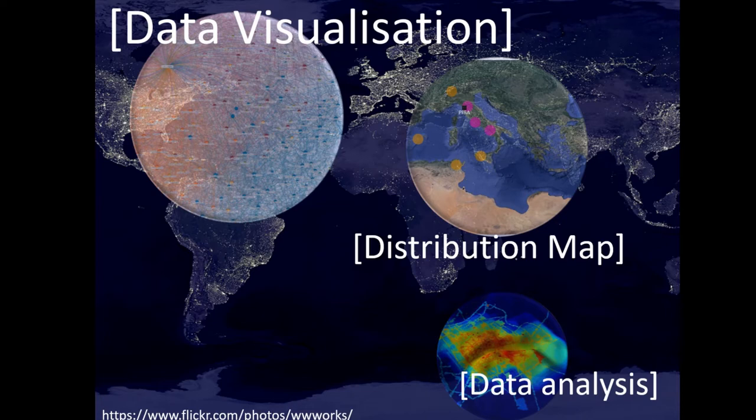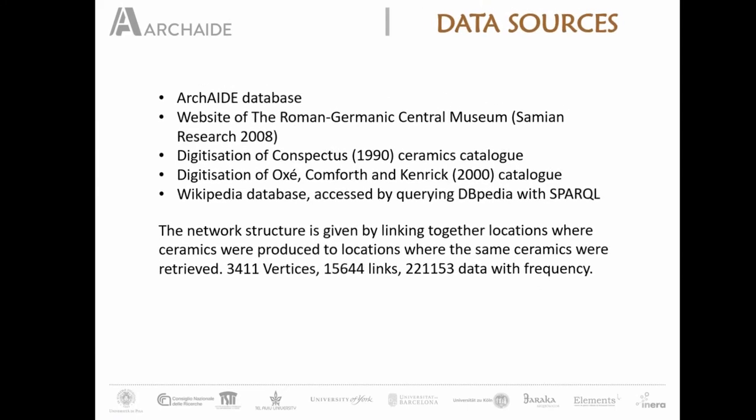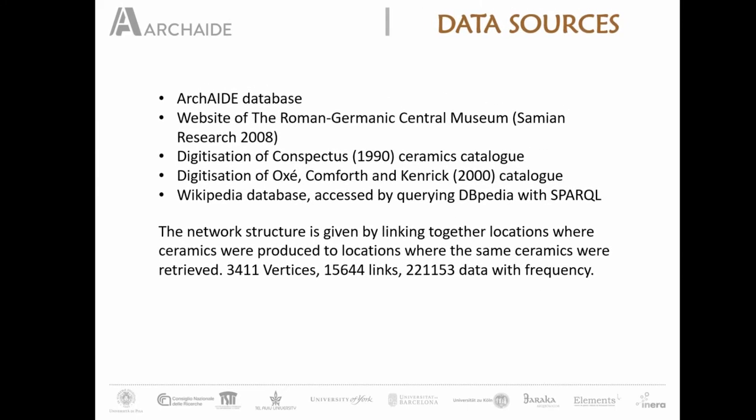We started working with this data thinking about a big data approach. The data we use are mainly from our database, but some come from the Roman Germanic Central Museum website, which collects many thousands of records related to Terra Sigillata through the automatic digitization of the Conspectus catalog, the digitization of the Ceramic catalog about stems of Terra Sigillata, and also using a SPARQL endpoint to query information from our database.